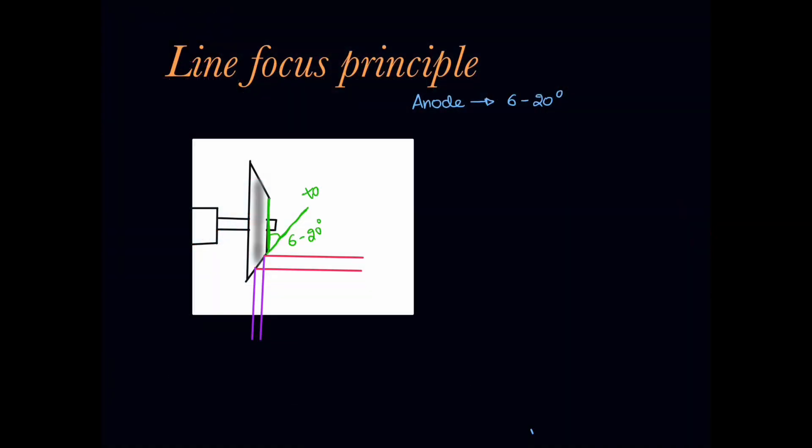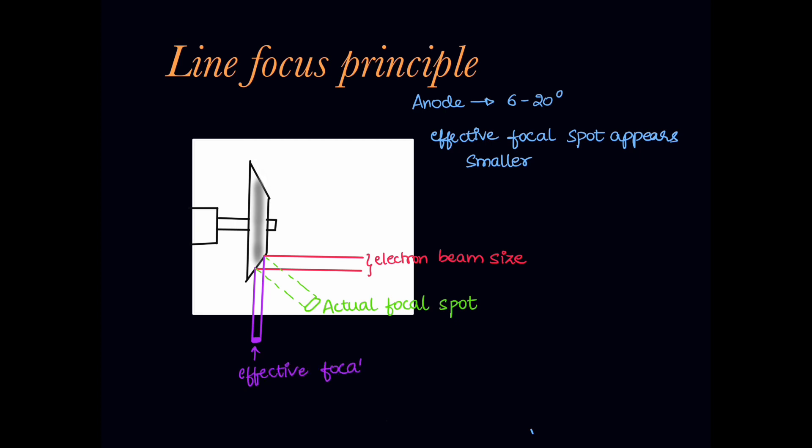Anode, usually the rotating anode is kept at an angle of 6 to 20 degrees which is also called as a target angle in order to focus the primary beam towards the patient. The electron hits the target at the focal spot but this focal spot, when visualized from down, from the angle of patient the effective spot will be smaller than the actual focal spot and this principle is called line focus principle.